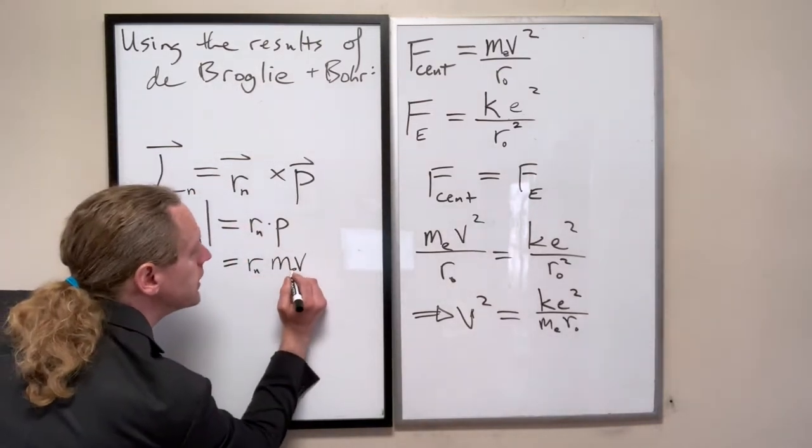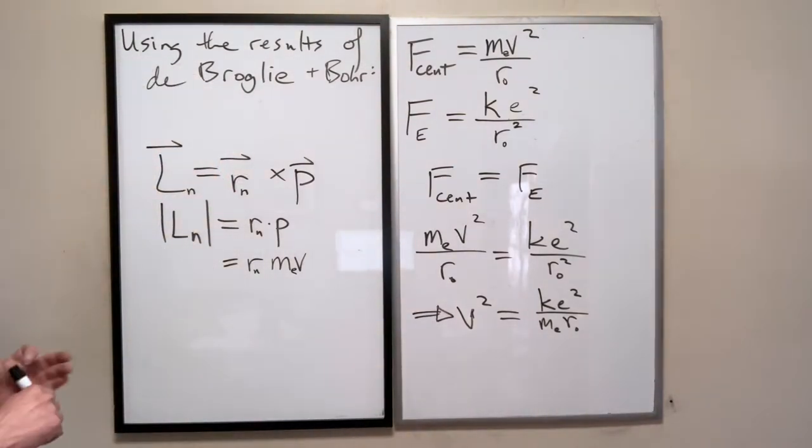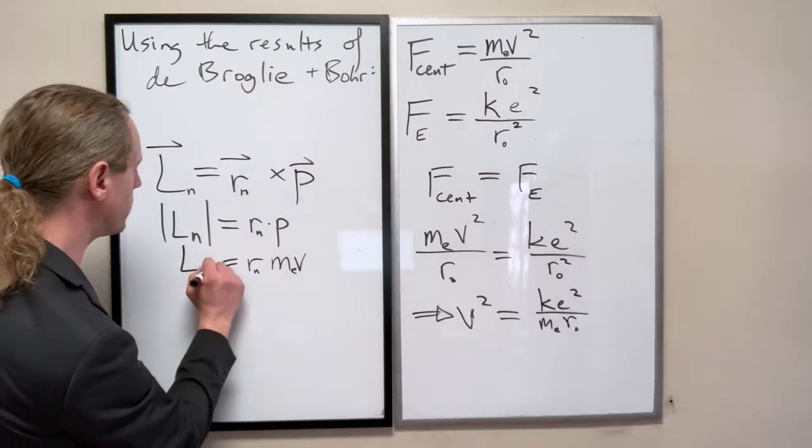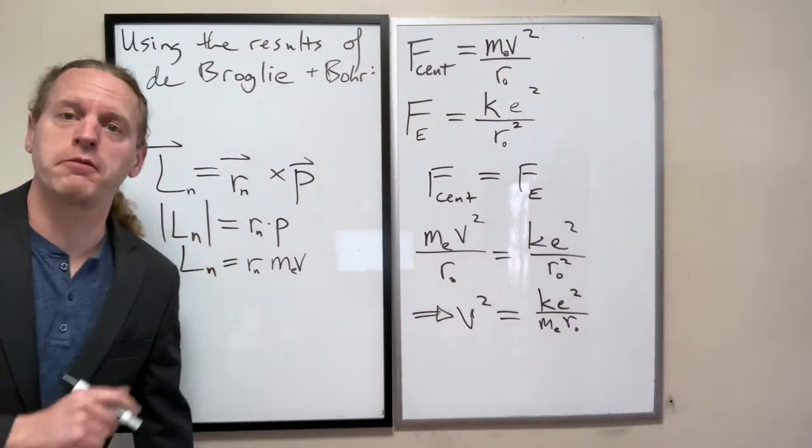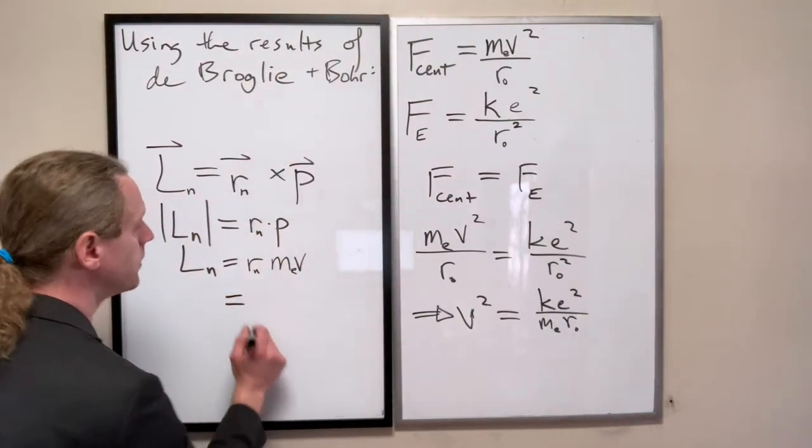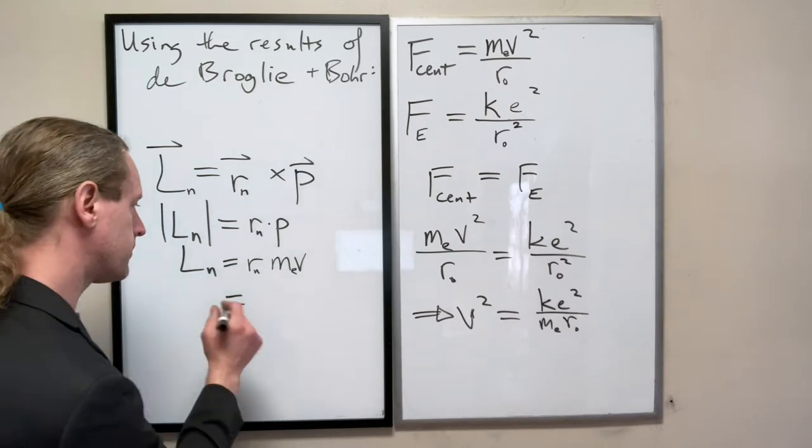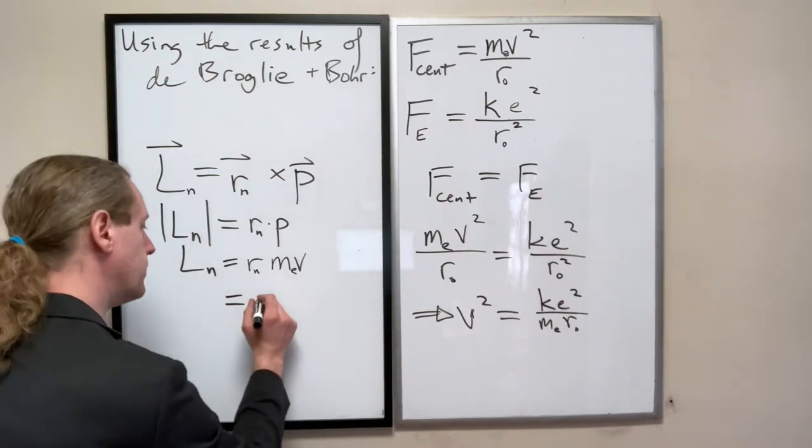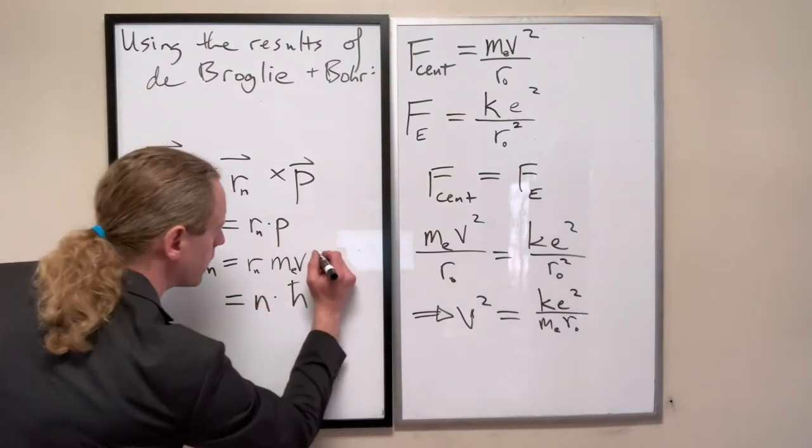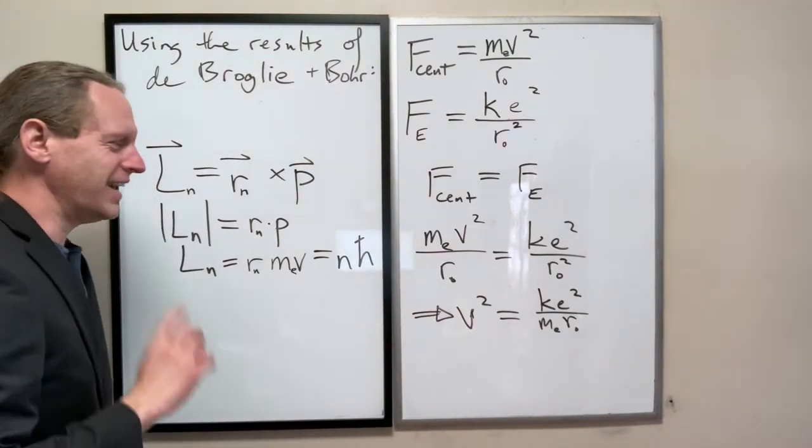Not only did Bohr identify that there is some angular momentum L sub N that equals that, but the more fundamental principle that he had all but just kind of guessed at is that the angular momentum is quantized. Specifically, for any energy level N, the angular momentum of that energy level is simply N times that funny-looking H-bar.